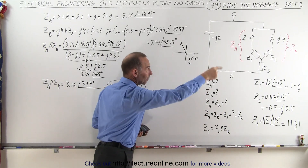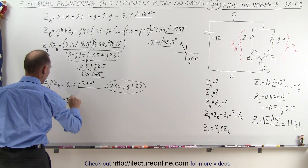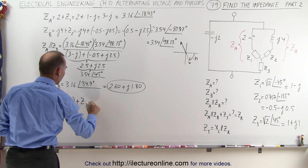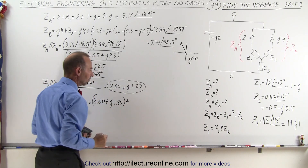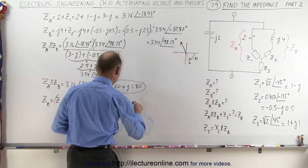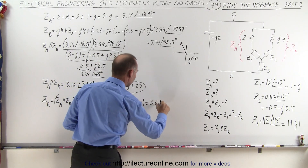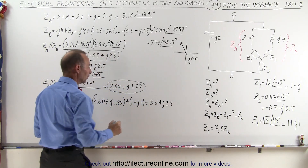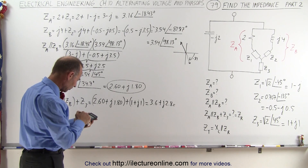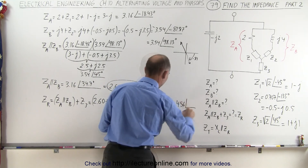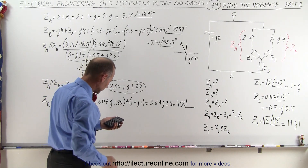Now we're going to add that to Z3 to get the impedance on the right part of the circuit. Z sub R equals Z_A||Z_B plus Z3. Since we're adding, we use rectangular format: 2.6 plus J1.8 added to Z3 which is 1 plus J1. When we add that we get 3.6 plus J2.8. Converting to magnitude and phase angle format: the square root of 3.6 squared plus 2.8 squared gives us 4.56, with a phase angle of inverse tangent of 2.8 divided by 3.6, which is 37.87 degrees.